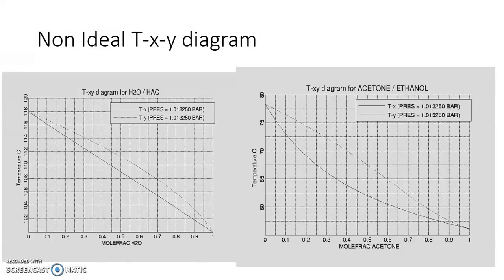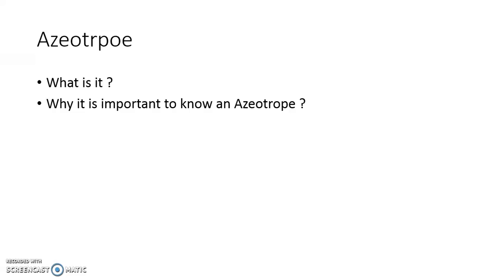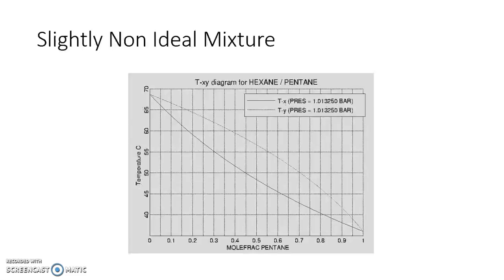An azeotrope puts a limit in the distillation column. We want to be away from the azeotrope, but depending upon the nature of the molecules, some binary systems are going to form an azeotrope. Hence it is very important for us to know that if an azeotrope exists, how it will impact the PXY and TXY diagrams.